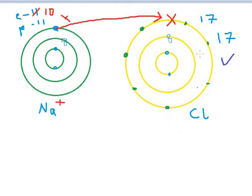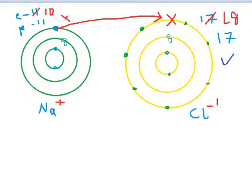Now let's look at chlorine. After gaining one electron, chlorine has 18 electrons but still only 17 protons. Since electrons outnumber protons by one, chlorine gets a charge of −1. So sodium becomes Na⁺ and chlorine becomes Cl⁻. This is the difference between a neutral atom and an ion, and this is how cations and anions are formed.